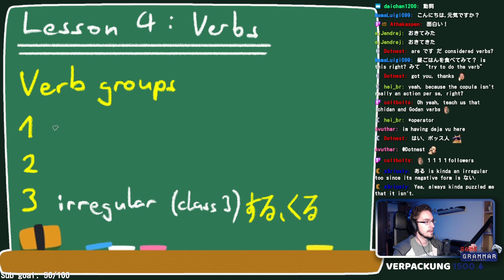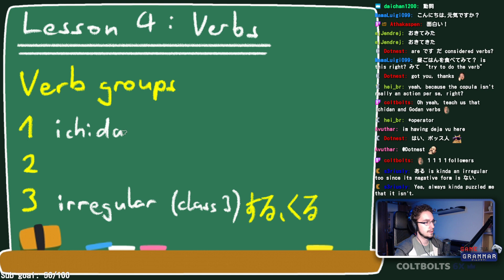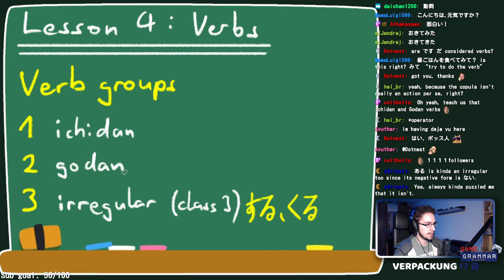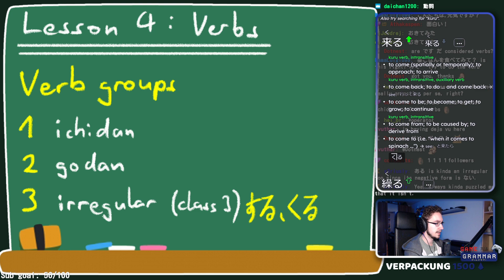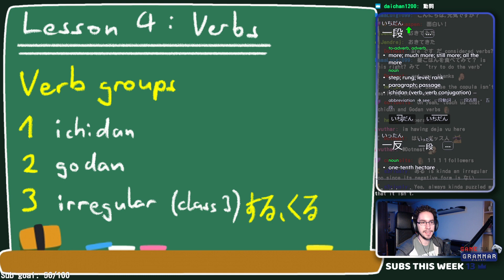Now the other two groups: I'm going to use the terminology I find best. For group one, we have ichidan verbs; for group two, godan verbs. These are the Japanese names — ichidan and godan.